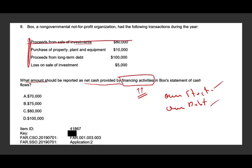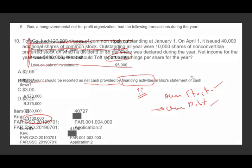Purchase of property, plant and equipment — that's investing, so that's out. Proceeds from long-term debt — you received money from long-term debt; that's financing. Remember: your own debt. Loss on sale of an investment — nope. So the answer is $100,000, answer D.